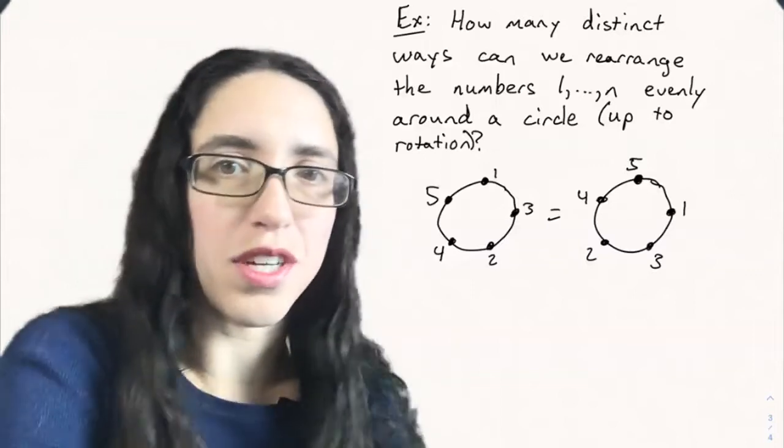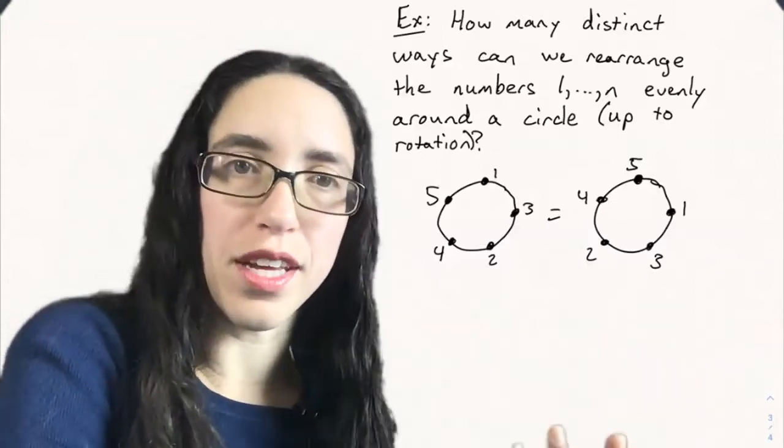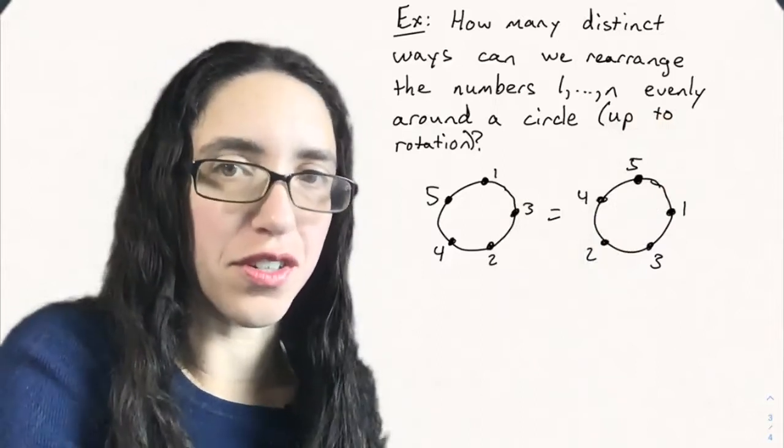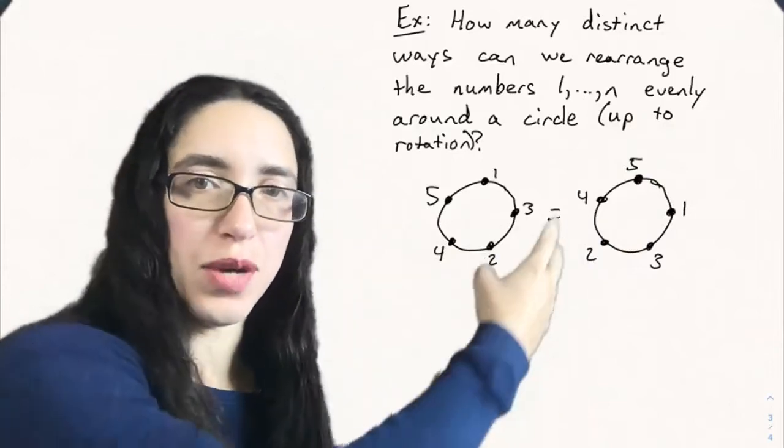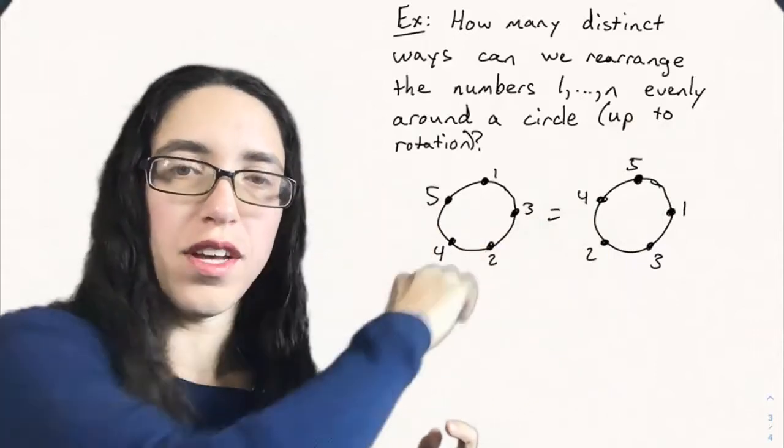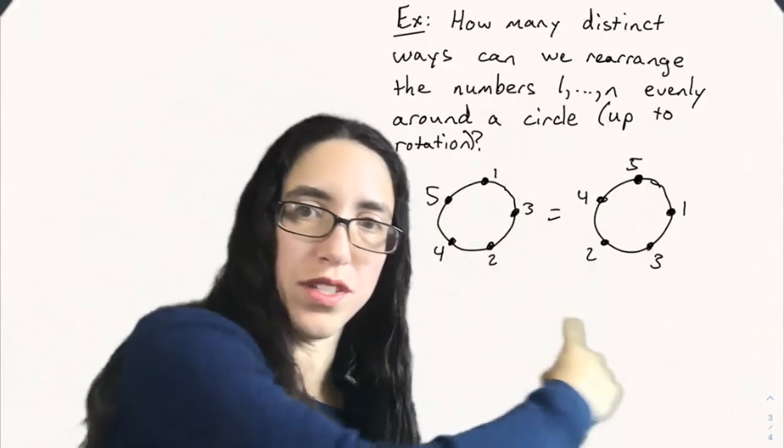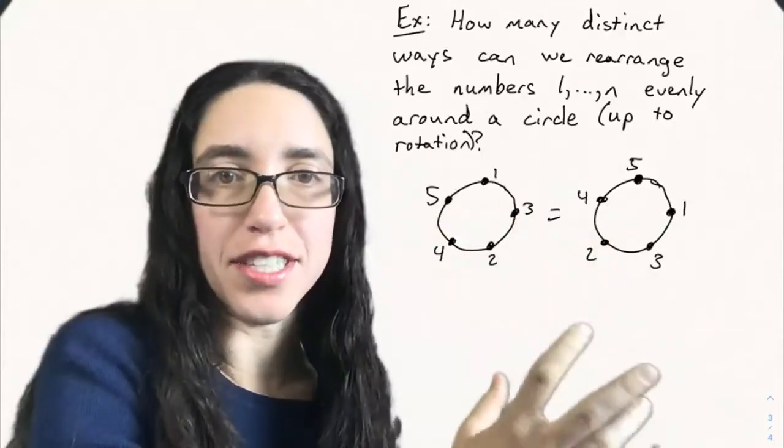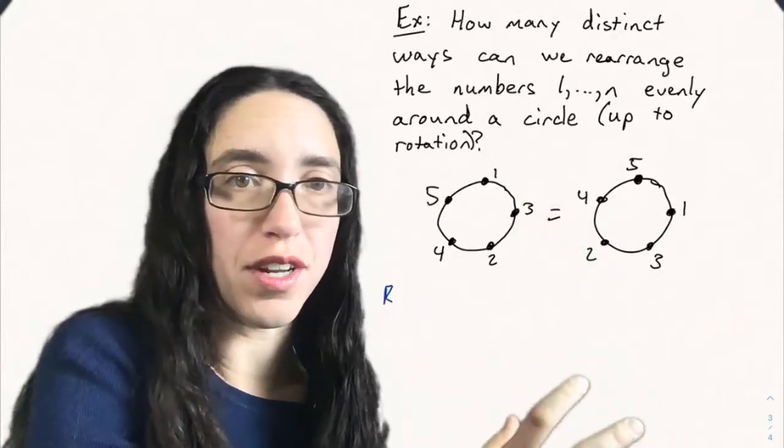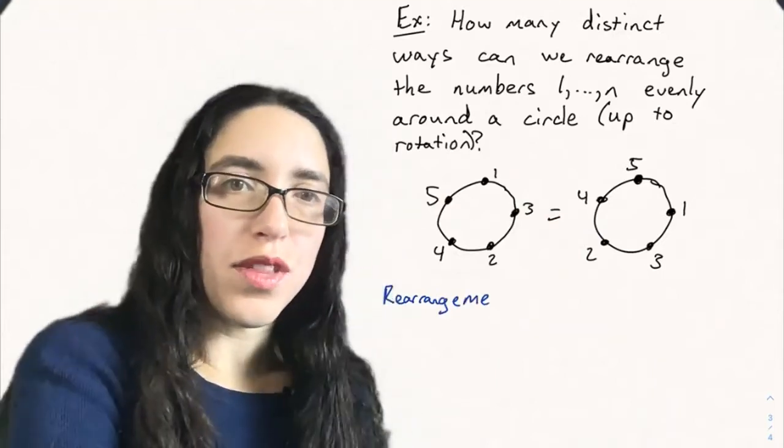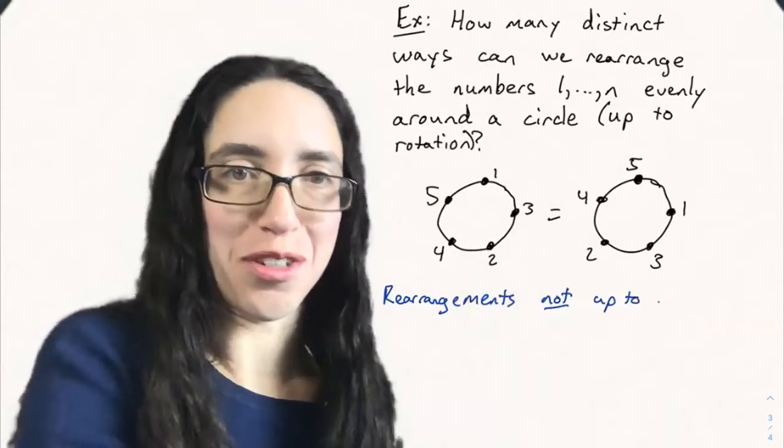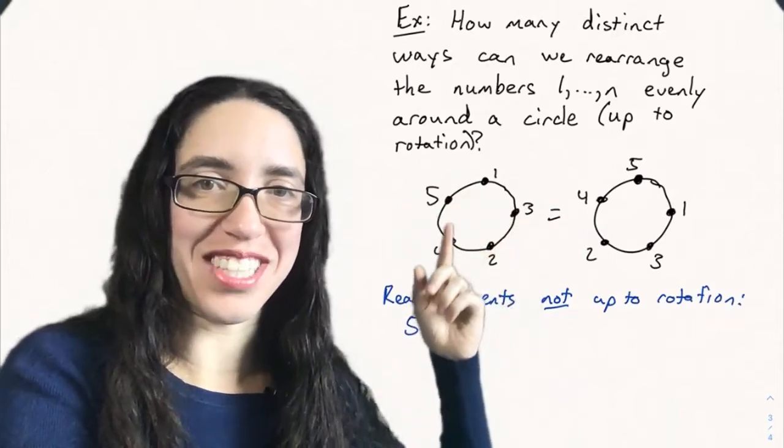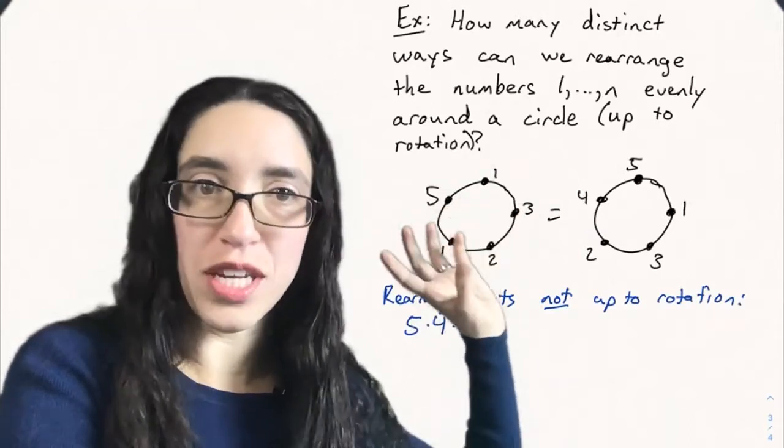Let's now use the division principle to solve another classical combinatorics question, which is sometimes called putting things on a necklace, or arrangements on a necklace. In particular, it says how many distinct ways can we rearrange the numbers one through n evenly around a circle up to rotation. What up to rotation means is that if you have a circle like one, three, two, four, five around the circle, then if you rotate it, they're still considered the same way of putting the numbers around the circle. We just want to count the inequivalent ways of doing that. The easier way of approaching this is to first overcount by not worrying about rotation, by saying let's count all the arrangements assuming that rotations are actually different.